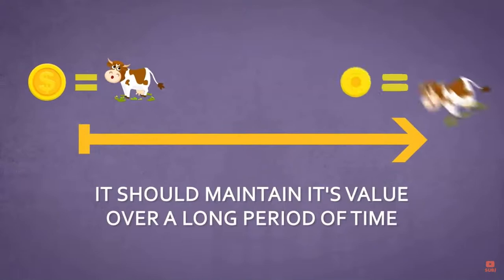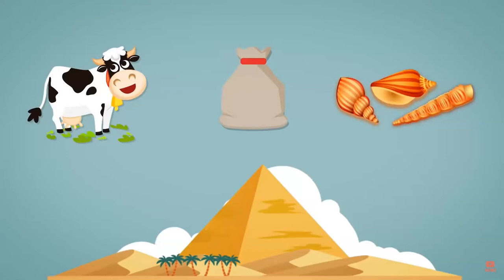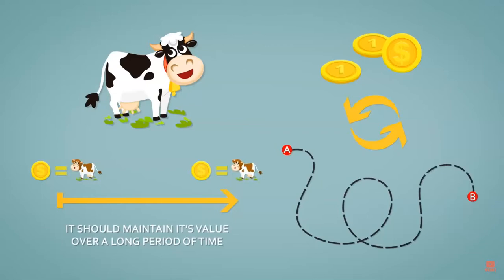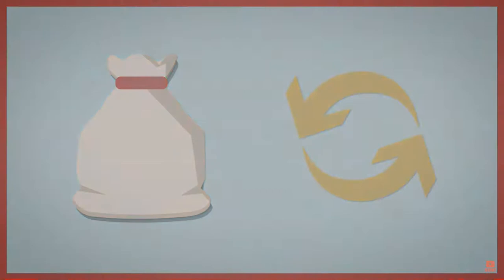Money must also be divisible so you can make change, and importantly it should maintain its value over a long period of time so your savings remain worth the same. Throughout human history there have been many media of exchange like cattle, salt, or seashells — but none lasted very long. Cattle wasn't divisible or easily portable, salt loses value over time and isn't homogeneous since one bag could be better quality than another.